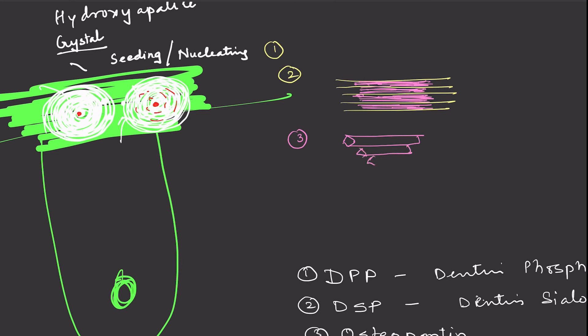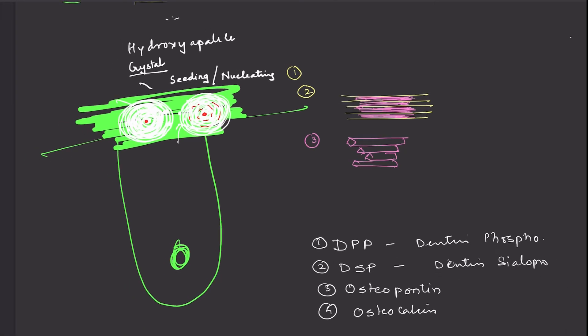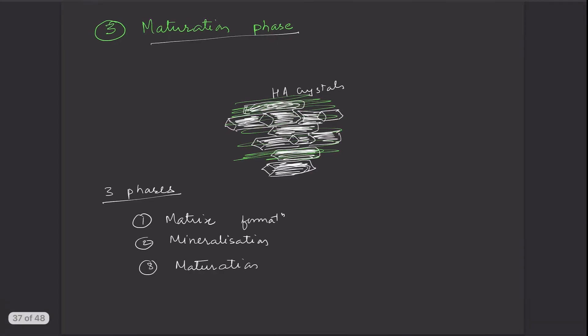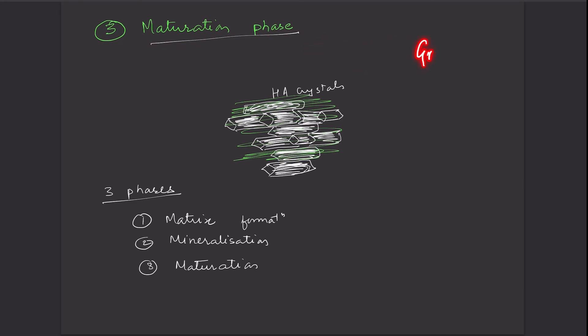This deposition leads to formation and further maturation of hydroxyapatite crystals. The third phase — the maturation phase — involves the elongation and growth of these hydroxyapatite crystals, completing the mineralization process.